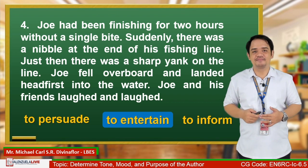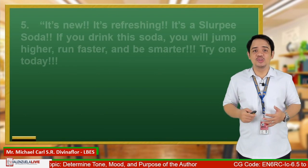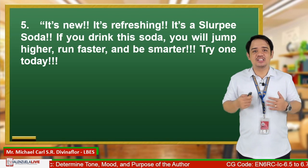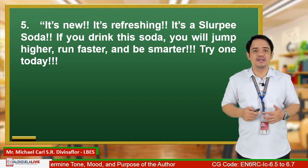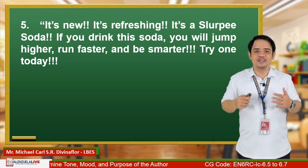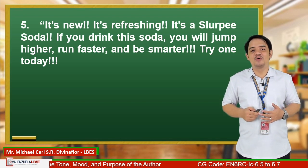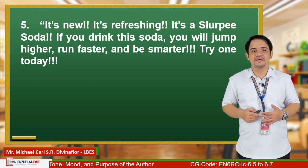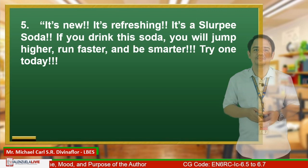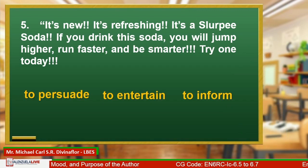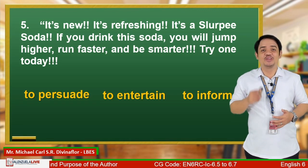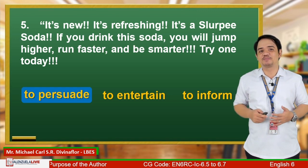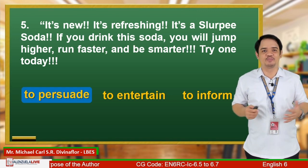Number 5: 'It's new. It's refreshing. It's Slurping Soda. If you drink this soda, you will jump higher, run faster, and be smarter. Try one today.' The correct answer is P — to persuade. The author aims to promote Slurping Soda to consumers.